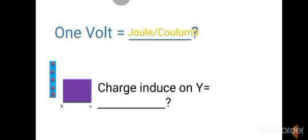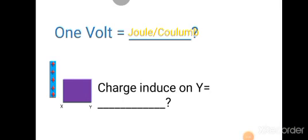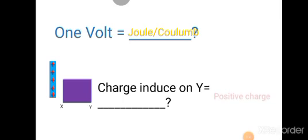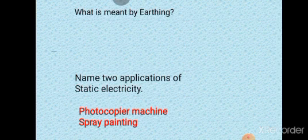If a charged rod is brought nearer to a conductor, what will be the charge induced on the Y side? The negative charges will be attracted and they will be at point X, and the positive charges will repel and will be gathered on end Y. So end Y will get positive charge.